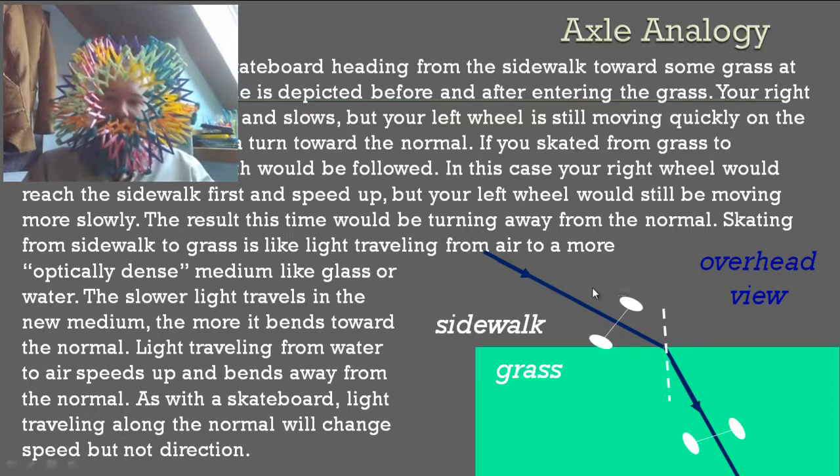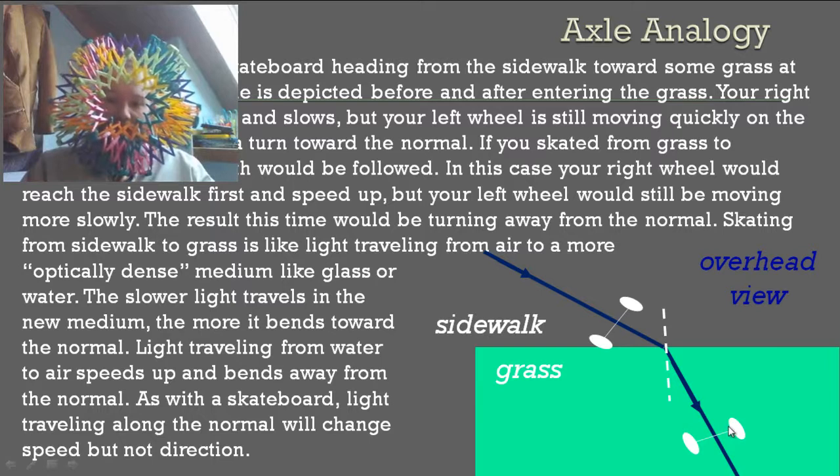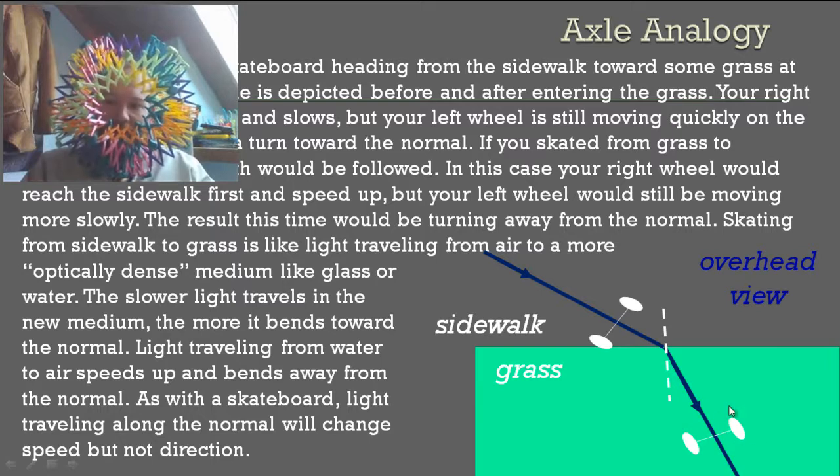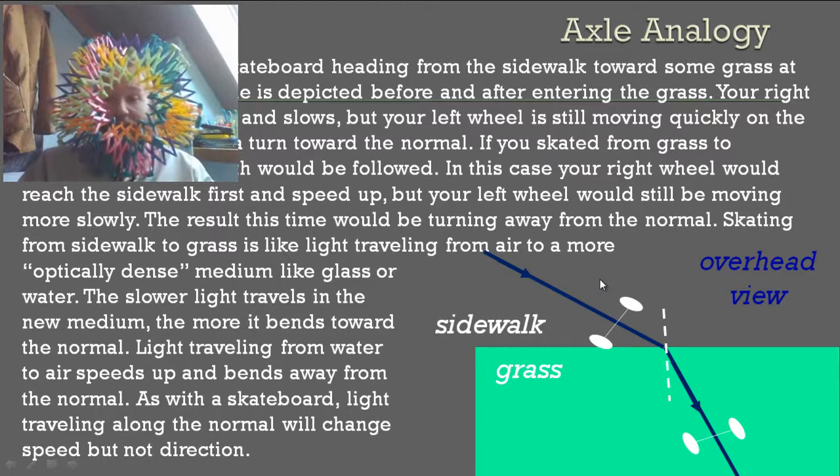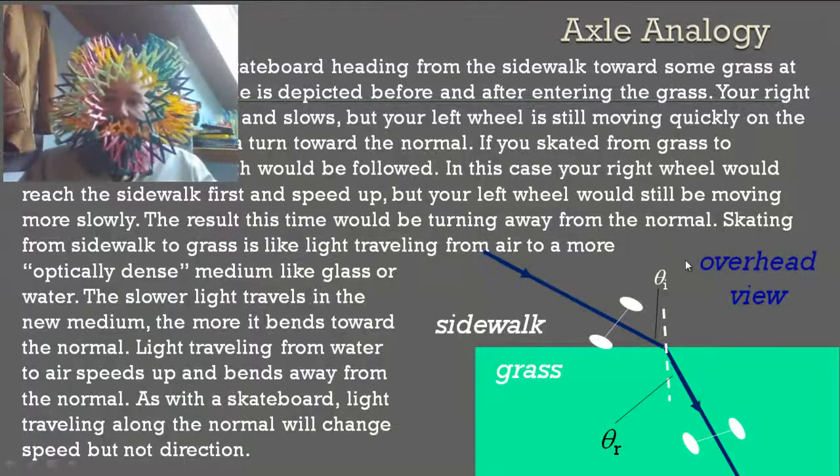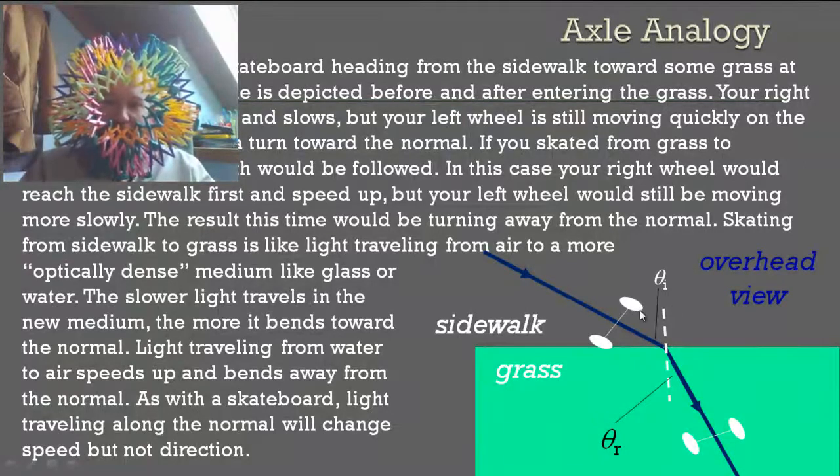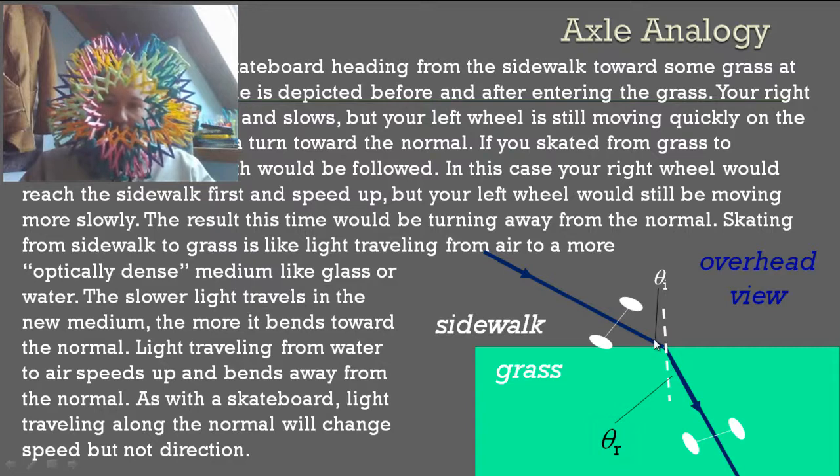When you come out of the grass on the other side, you're going to start going exactly the same way as you did before, because this wheel here is still going to be in the grass and it's going to move more slowly, but this wheel is going to hit the sidewalk first and speed up. So you're going to turn back away from the normal. Here you can see I've drawn in the incidence angle and the refracted angle. This time they're not equal, they're going to be different, but we're going to have an equation that relates these two.